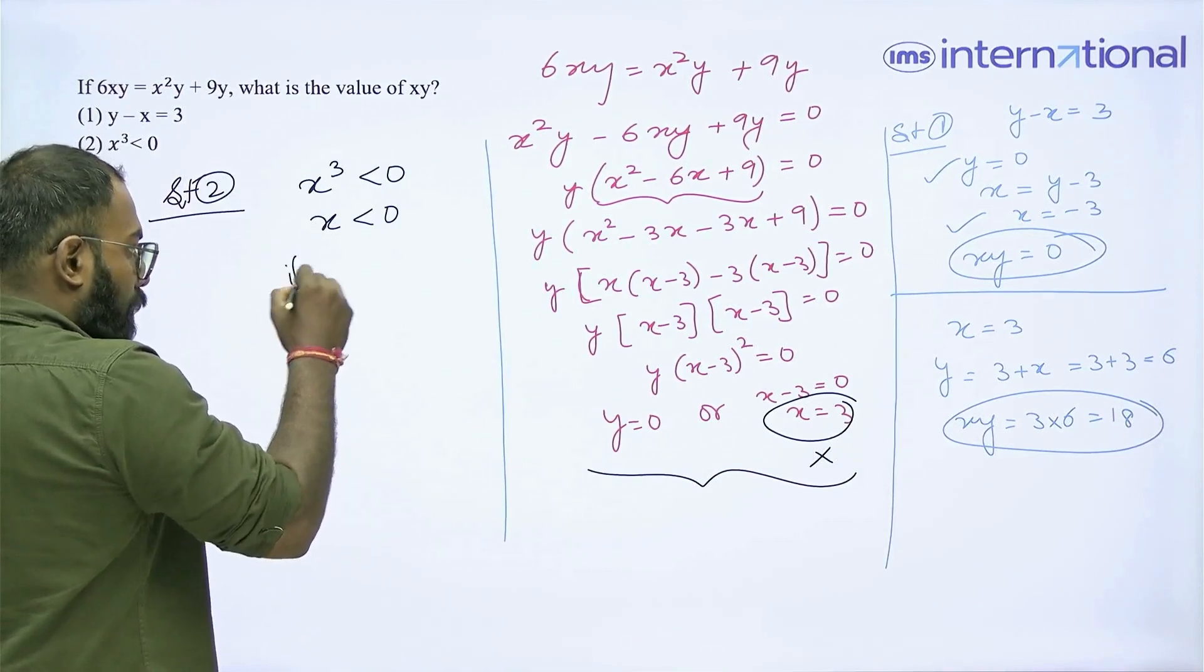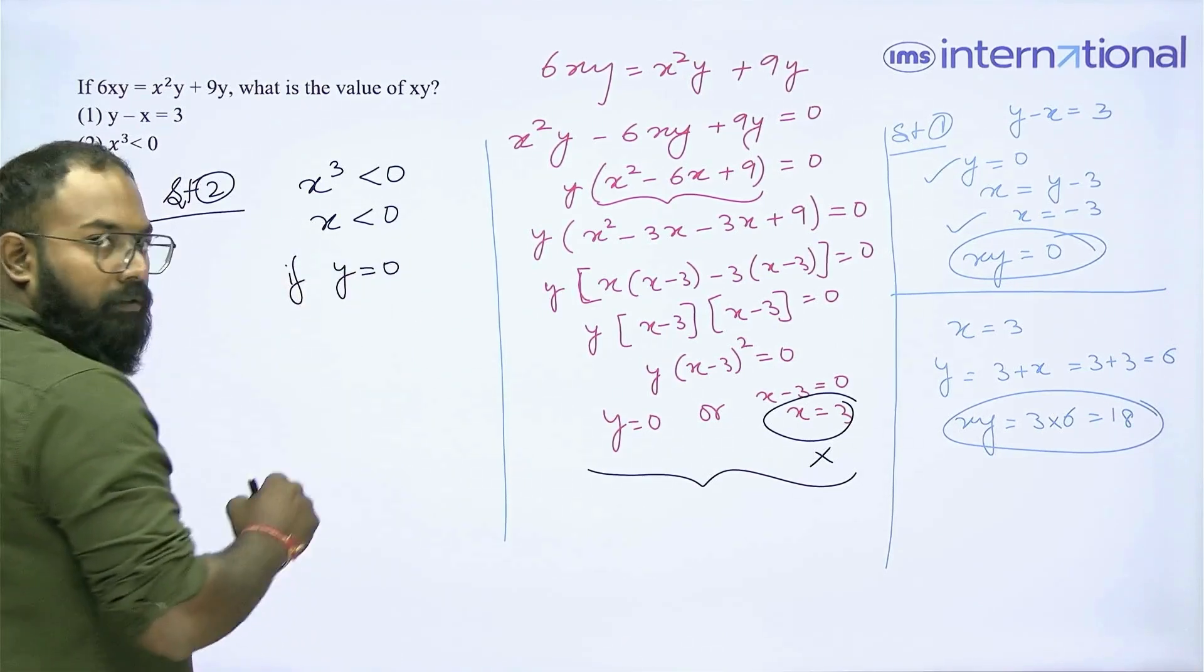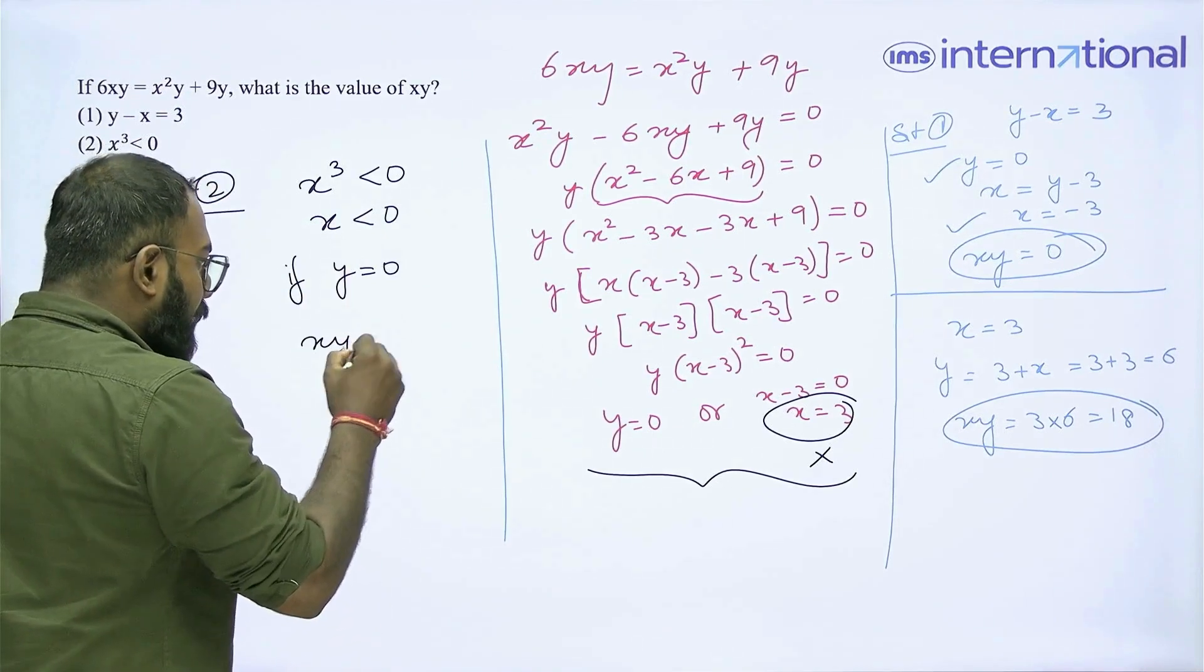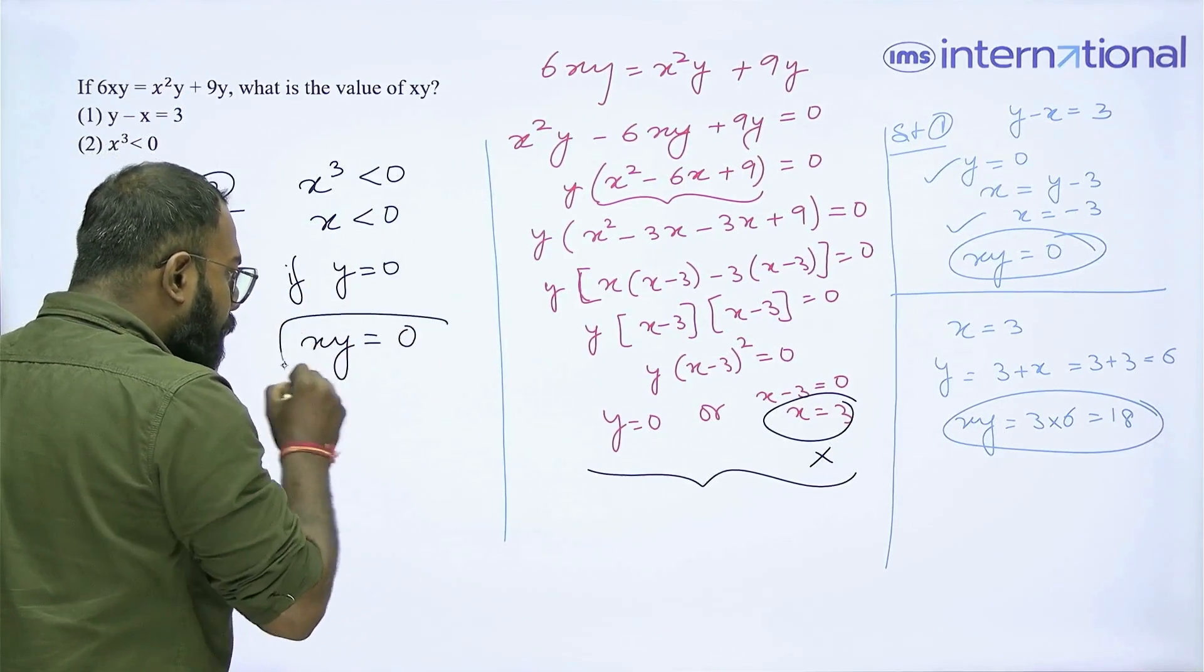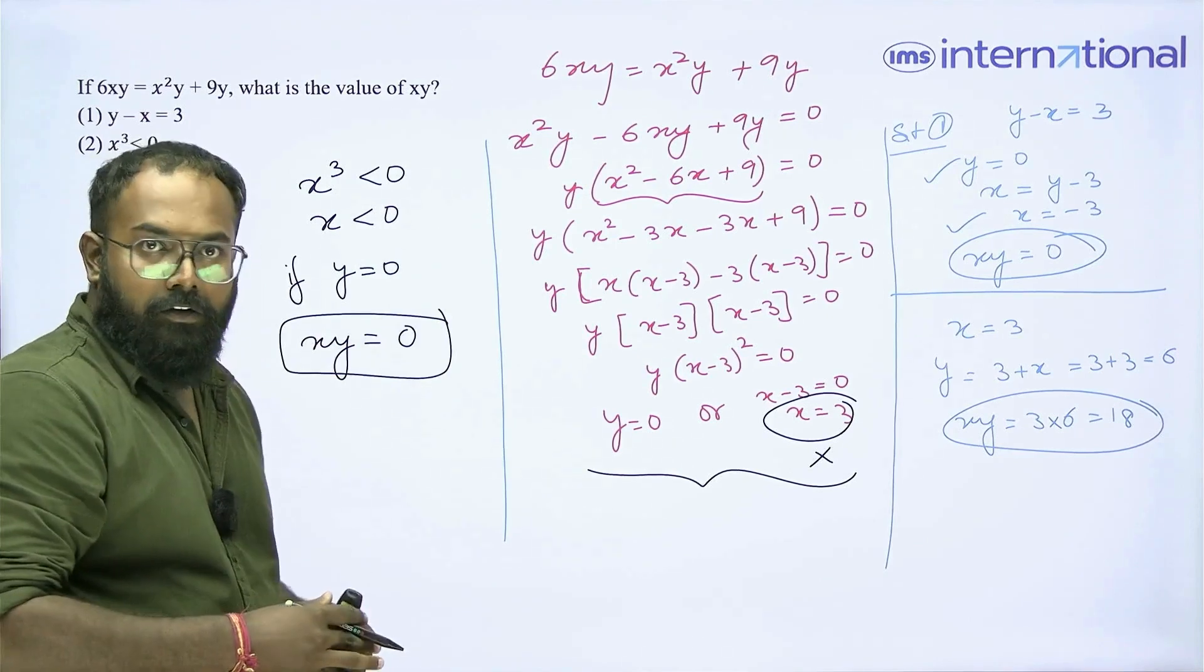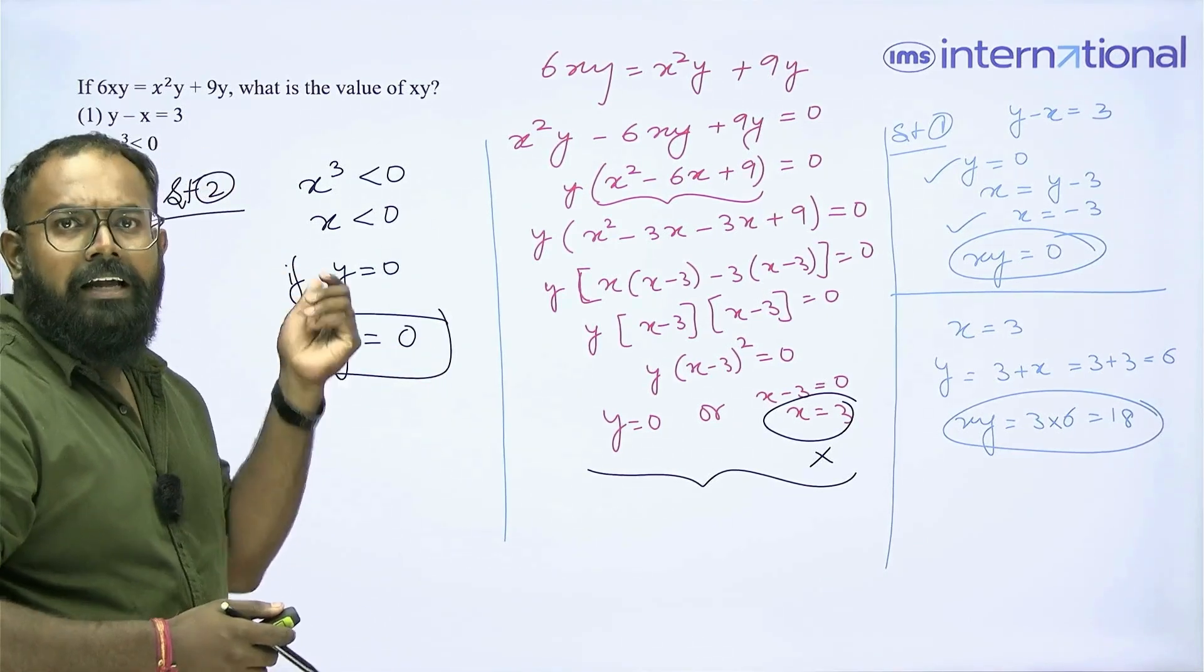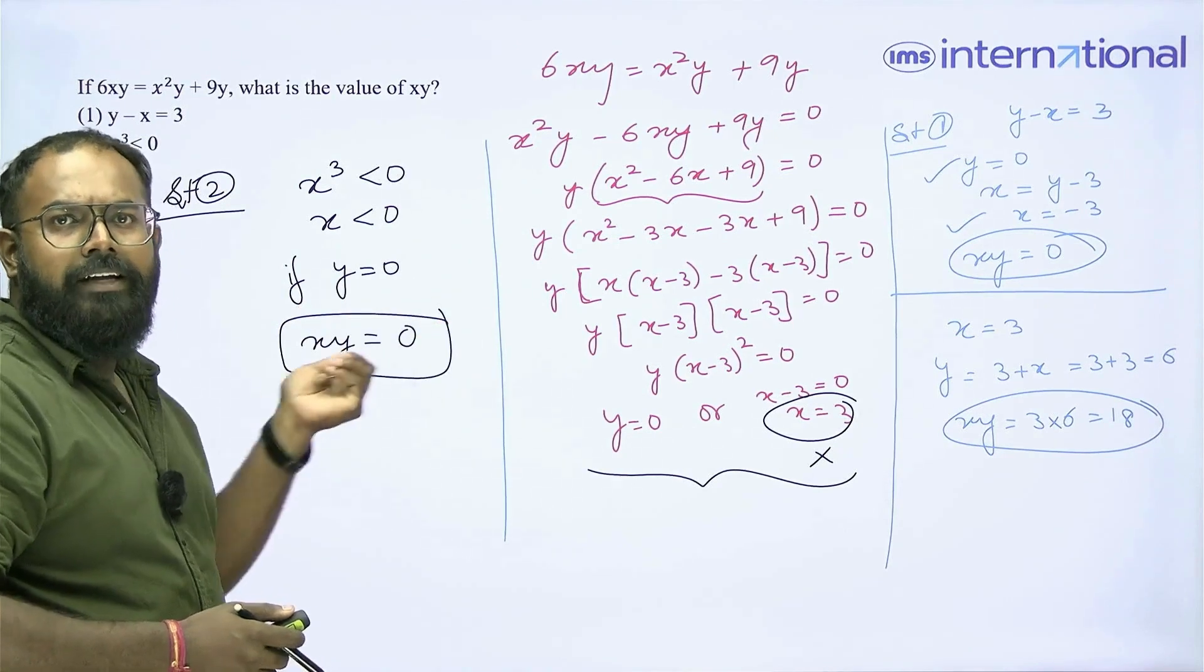That means the only option I am left with is y = 0. Now, if y = 0, and x is a number that is less than 0, what is xy? What can we say about xy? xy has to be 0, because the product of two numbers is 0, if at least one of them is 0. And since y is 0, xy has to be 0.